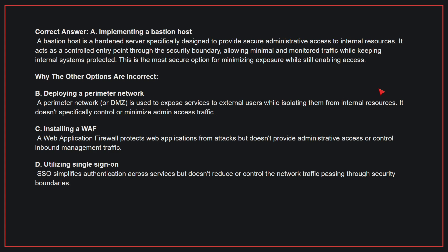Why the other options are incorrect: B. Deploying a perimeter network is used to expose services to external users while isolating them from internal resources — it doesn't specifically control or minimize admin access traffic. C. Installing a WAF protects web applications from attacks but doesn't provide administrative access or control inbound management traffic. D. Utilizing single sign-on simplifies authentication across services but doesn't reduce or control the network traffic passing through security boundaries. Therefore, the correct answer is A.